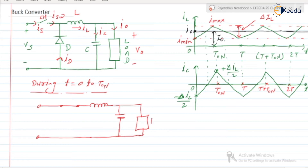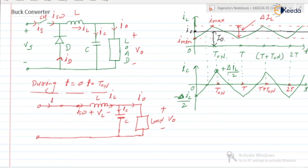The voltage across the load is V0, capacitor current is IC, load current is I0, inductor L carries current IL, inductor voltage is VL, switch current is ISW, supply current IS, and supply voltage VS. When the switch is in the ON state, the inductor goes on storing energy.